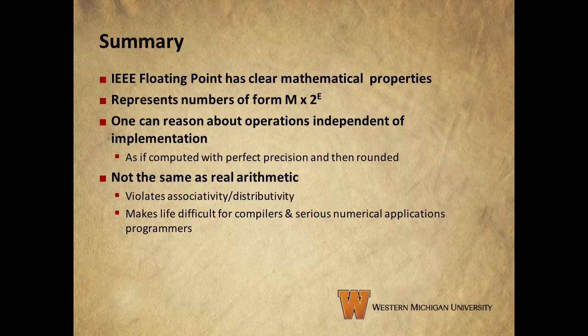Some things to keep in mind about floating point numbers: IEEE floating point has clear mathematical properties and represents numbers of the form M times 2 to the E. Because of this, we can reason about operations independent of the implementation. Also, like everything else we've talked about, it's not the same as real arithmetic. Because of issues with rounding and overflow, floating point arithmetic violates associativity and distributivity. This could make things tough for compilers and anyone trying to implement numerical applications.